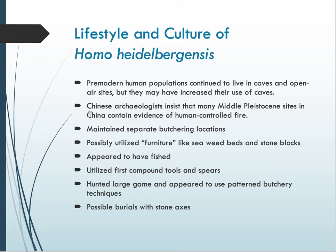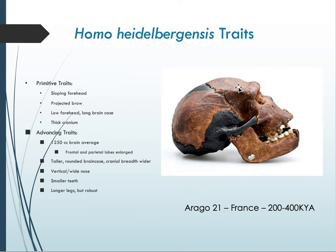The lifestyle of Homo heidelbergensis is interesting. Pre-modern populations appear to be living in both cave and open-air sites. Chinese archaeologists insist that many Middle Pleistocene sites in China contain evidence of human-controlled fire. They were maintaining separate butchering sites and possibly utilizing furniture-like objects or building objects that worked as beds or areas of comfort. This species appears to be the first to potentially take advantage of fishing resources, making compound tools and spears, and hunting large game — a big change not seen in any prior species.